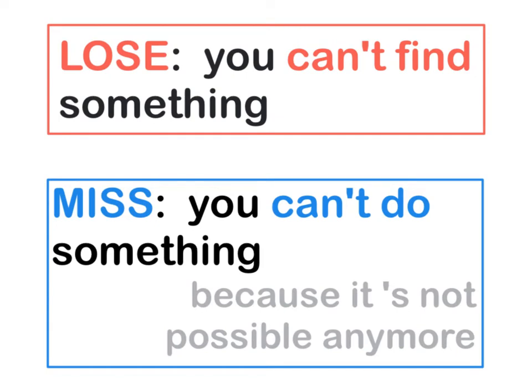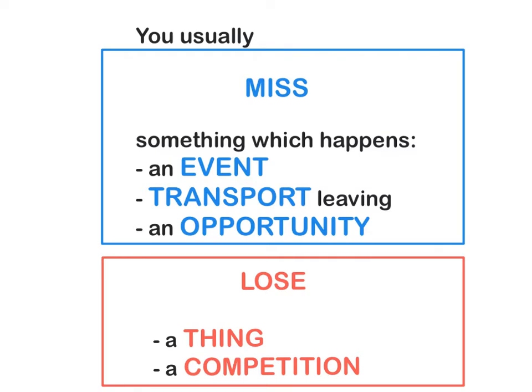How do you use 'lose' and 'miss' correctly? 'Lose' is when you can't find something, while 'miss' is usually when you can't do something because it's not possible anymore. It's also when somebody is far away and you feel sad because you can't see them. So: 'lose' when you can't find something, 'miss' when the opportunity has passed or when you can't see someone who is far away.